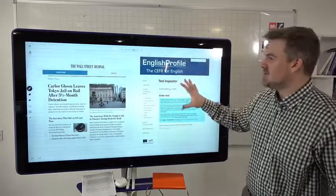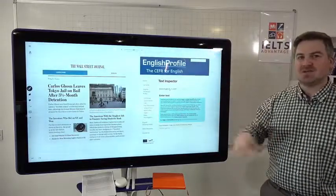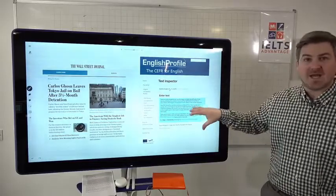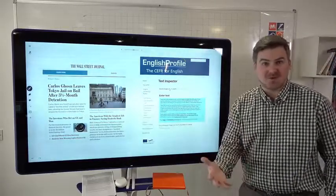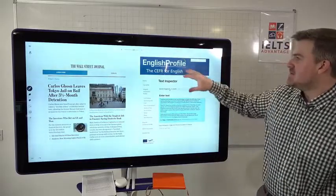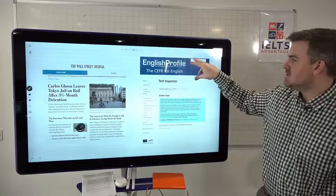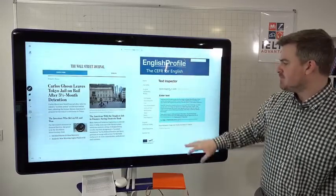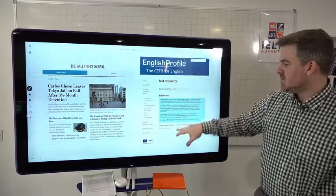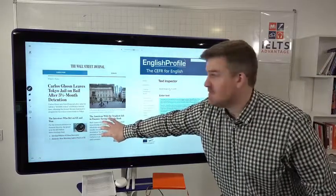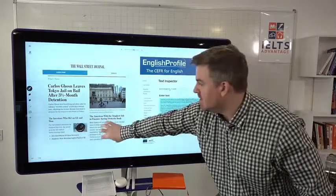So what I'm going to show you now is a really great online tool that you can use. And it's produced by Cambridge English. So the people who write the IELTS test, so you know that it's relevant and it's reliable. And if you type in Cambridge Text Inspector or Cambridge English Profile Text Inspector, what you can do is you can put in a text. So you could take the text from the Wall Street Journal here, just as an example, put it in.